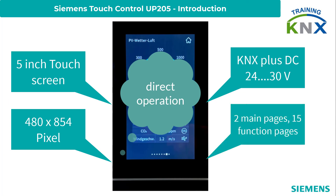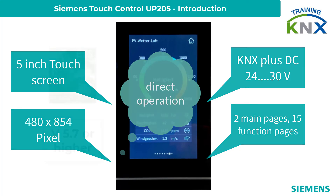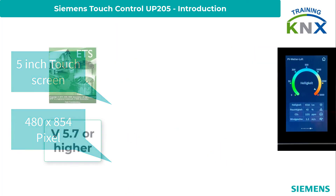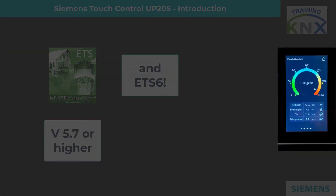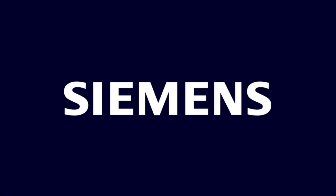In total, up to 15 function pages and 2 stored pages can be configured via ETS, as from version 5.7 and higher. ETS 6 is of course also fully supported.